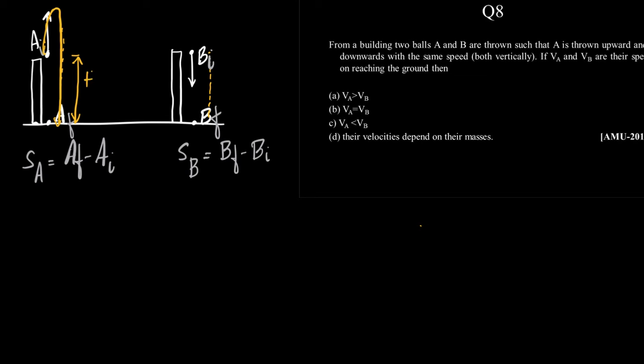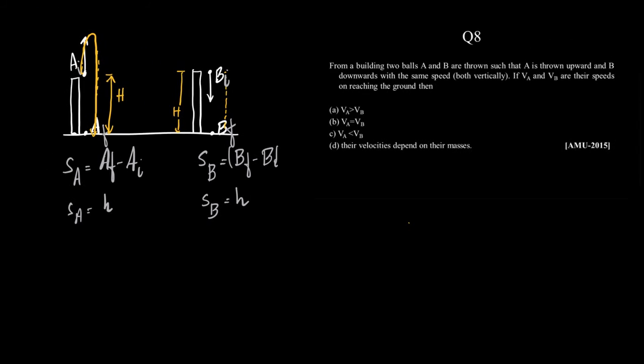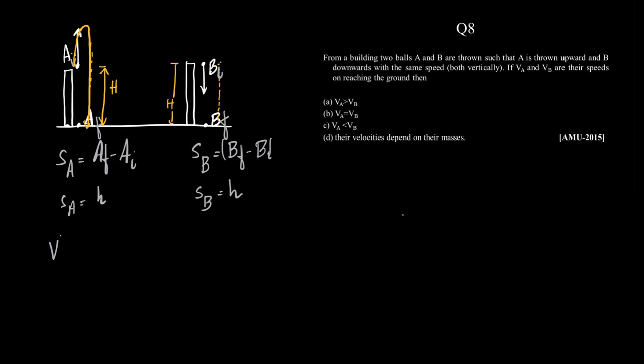That distance is equal to the height of the tower. So s_a is equal to h (i.e., A-final minus A-initial), and s_b is also equal to h (B-final minus B-initial). We are talking about displacement, not distance — displacement is the shortest path, which equals the height of the tower for both.